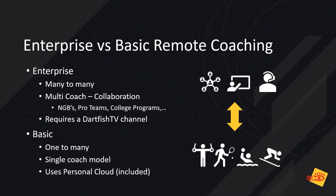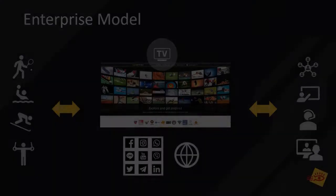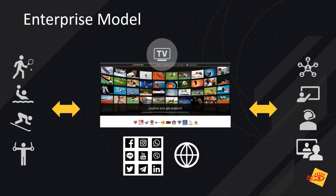The second is a basic or one-to-many model that is used by a single coach to work with his or her athletes. This model uses a personal cloud, which is part of the Live S annual subscription. The enterprise model's core element is a Dartfish TV channel that connects all parties — athletes, coaches, and staff. National governing bodies, pro teams, colleges, academies, and even high schools would use this many-to-many model. Athletes can consume educational content and also upload their own performance footage for analysis. Coaches can also access other content on the channel, and the channel has many other attributes like the ability to monetize content, integrate with third-party websites, connect to reporting APIs, and more.